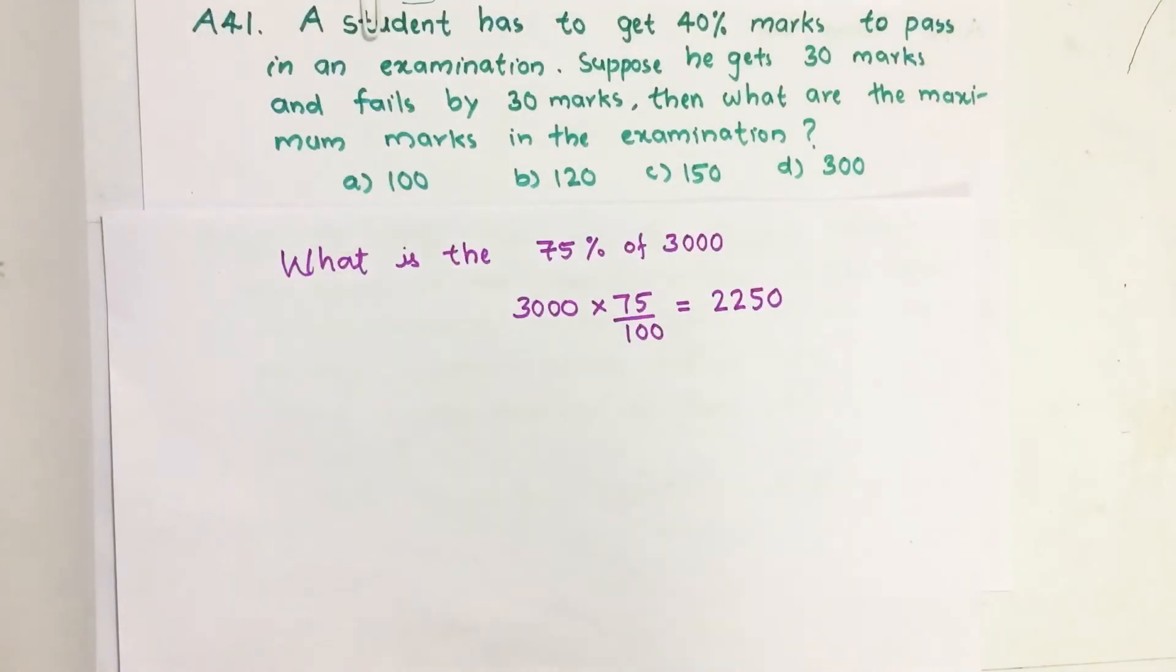Hello everyone, here I am going to solve 2018 CSAT question number 41 from question paper series A. A student has to get 40 percentage marks to pass in an examination. Suppose he gets 30 marks and fails by 30 marks, then what are the maximum marks in the examination?